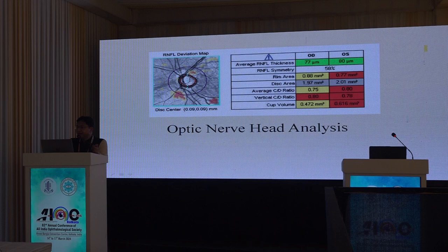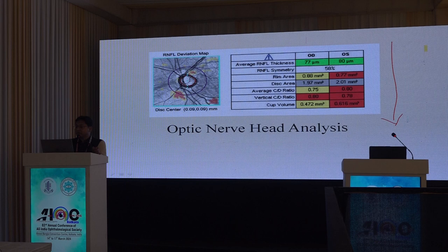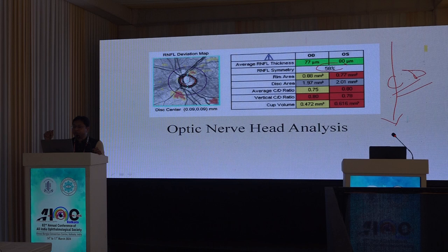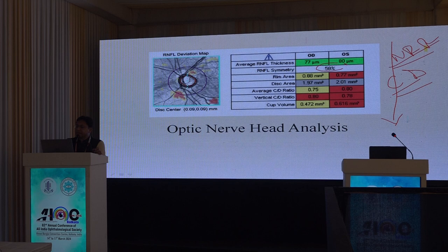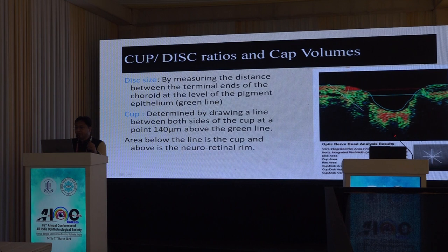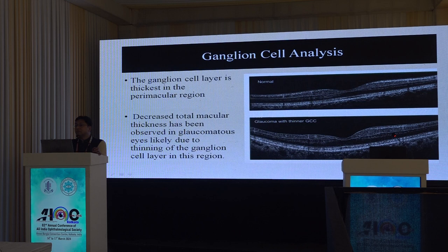OCT also allows optic nerve head analysis, providing CD ratio and NNR assessment alongside RNFL thickness. Symmetry of RNFL between eyes is important — gross asymmetry warrants investigation. OCT also provides disc area, average CD ratio, and cup volume, giving a double-check on the parameters you assess with 90D or 20D lenses. Ganglion cell loss occurs even before RNFL loss, so OCT-derived ganglion cell complex analysis gives an additional early indicator.